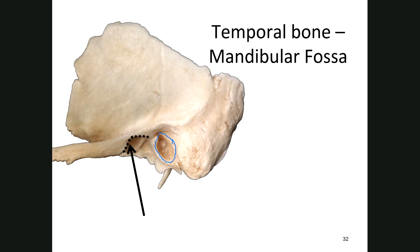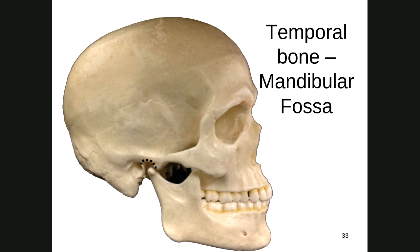The mandibular fossa is visible on the model here. A fossa is a depression in the bone — whereas a foramen is a hole in a bone. You want to know these terms.